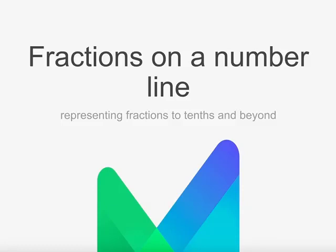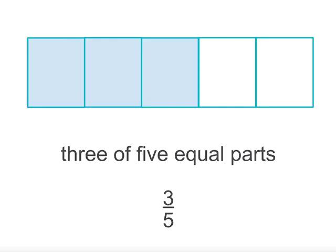Fractions on a number line. We have looked at fractions as regions of a fraction bar. This one is showing 3 of 5 equal parts, or 3 fifths.